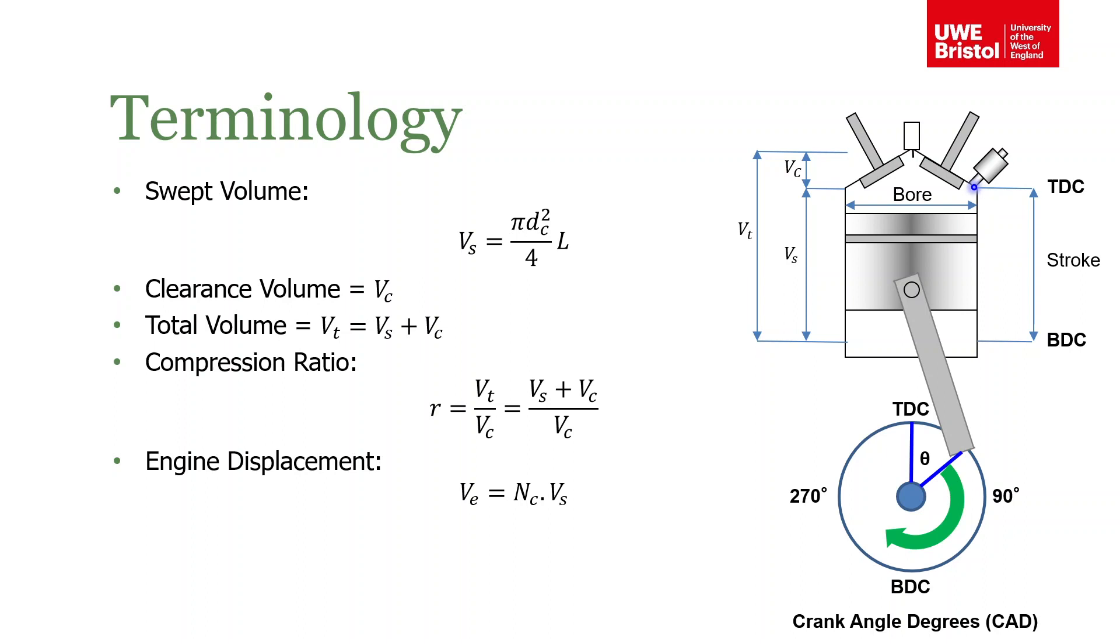So the piston, when it's right at the very top, is at what's called top dead center, or TDC. This will be up here, and the piston will be as far up, as high as it can go in the cylinder. As it rotates around, when it gets to the bottom, it's at bottom dead center, or BDC. The difference between those two is the stroke of the engine.